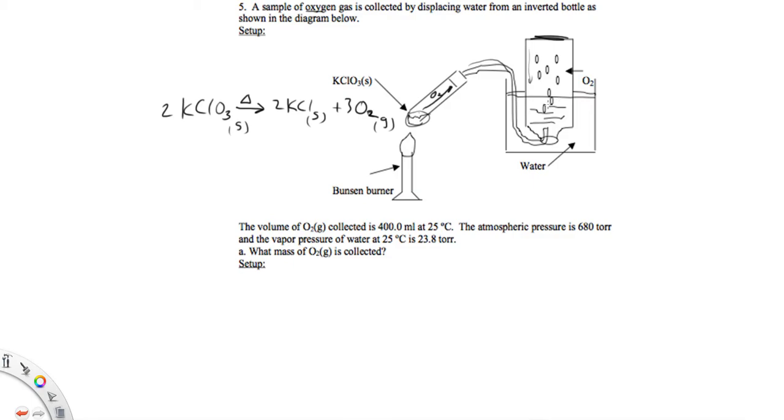So it says we have 400 milliliters of oxygen at 25 degrees Celsius, and it says the atmosphere pushing down is 680 torr when it was measured, and then that's going to equal the pressure inside. The oxygen inside is pushing also at 680 torr because the pressure inside and outside have to be the same.